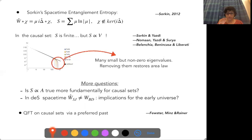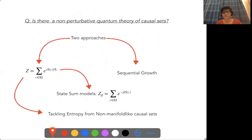There's also an approach to QFT on causal sets using a preferred past, which I won't have time to talk about.